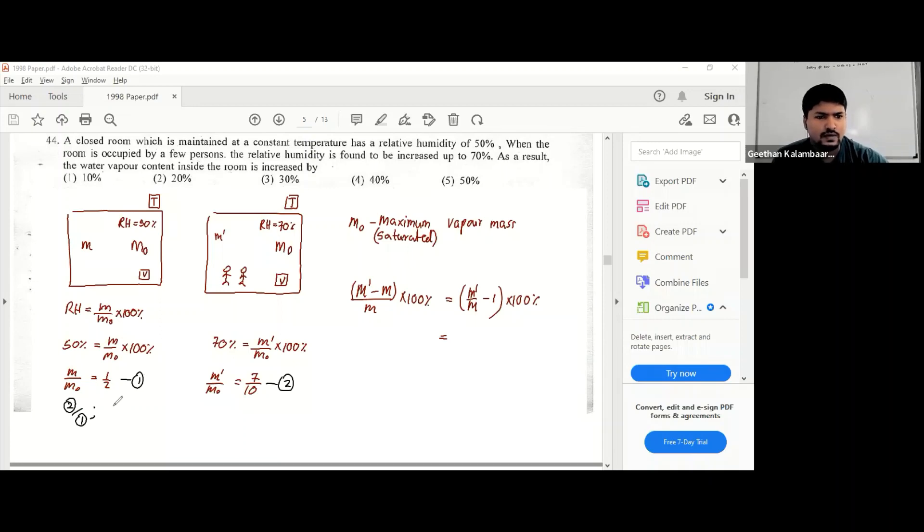So you divide 2 by 1, you get M dash over M equals 7 by 10 divided by half. So it's 7 by 5. 7 by 5 minus 1 equals 2 by 5 into 100%. So it's 40%.